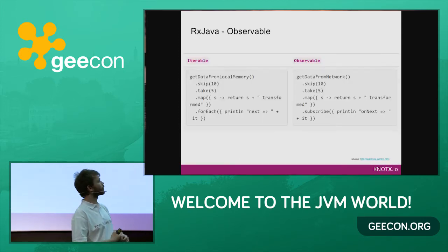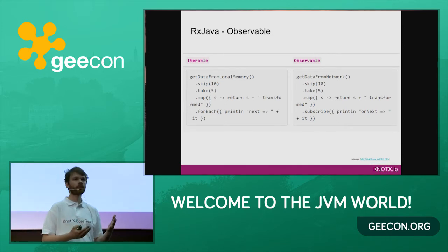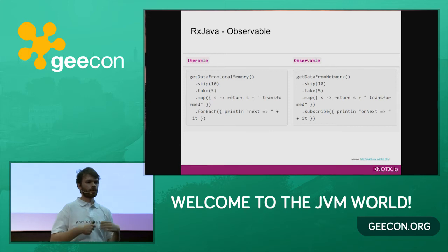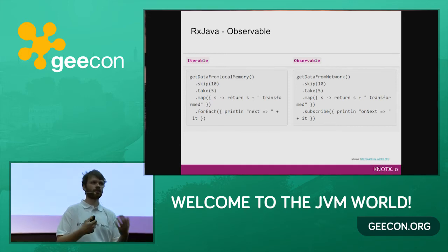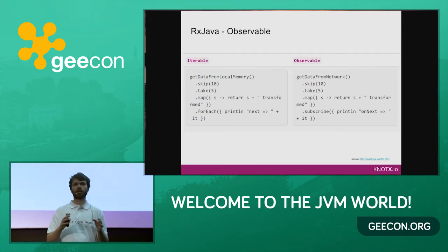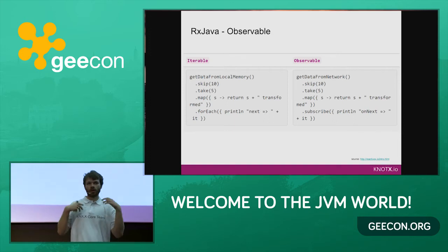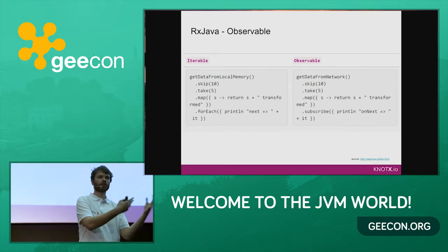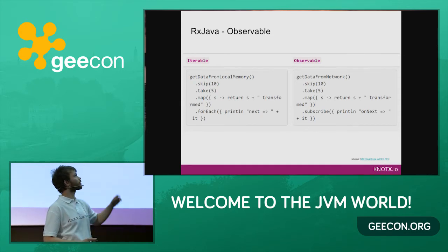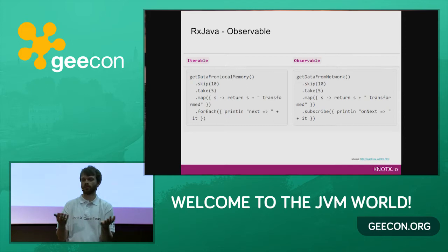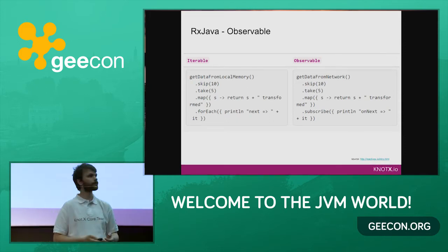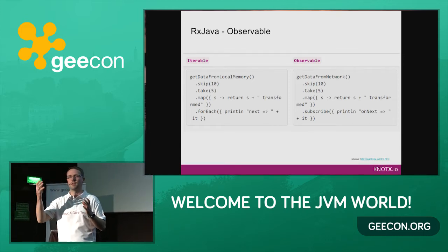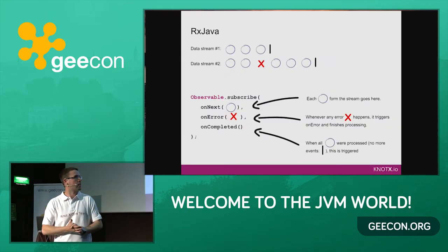RxJava is a form of dealing with asynchronous data in a fluent way that we know from the Streams API in Java 8. RxJava comes with the Observable idea, which is an extension of the observer pattern. And it totally changes our mindset — from 'how to deal with asynchronous data' to 'what can I do with asynchronous data.' You have operators like skip, take, map that help us work with data the way we want. You can imagine that you record some actions and push play — that's how reactive extensions work.